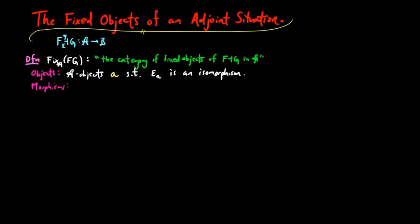And we define the homset of fixed objects A and A prime to be the same as the homset in A of A and A prime for each pair of fixed objects. In other words, the category of fixed objects in A is a full subcategory of A.